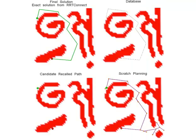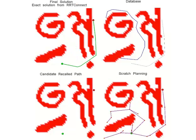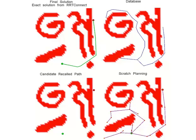This view shows how scratch planning competes against recall planning. Initially, the database shown in the top right is empty and the first paths are planned from scratch, shown in the bottom right. Eventually, the database provides a first recall.